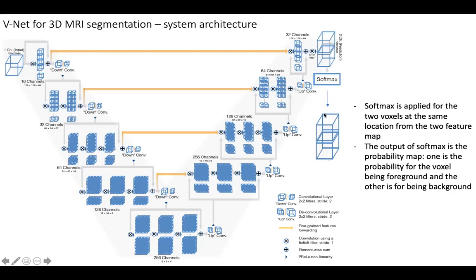After softmax, we still get two 3D feature maps, but this one is a probabilistic feature map. Each element, each voxel element, is the probability for this voxel being the foreground. This one will be the probability for this voxel to be in the background.